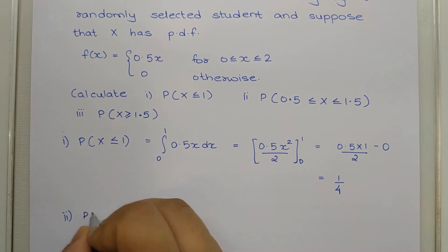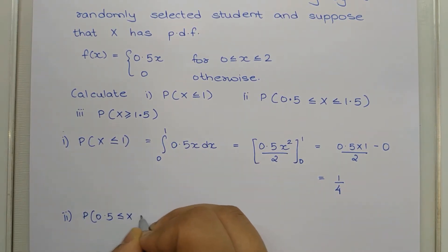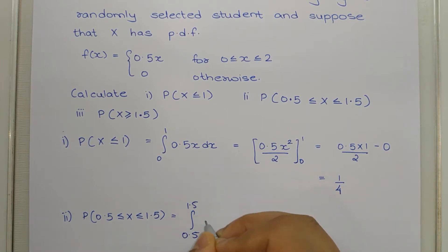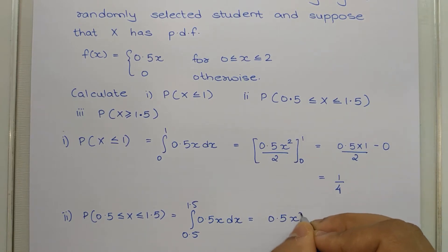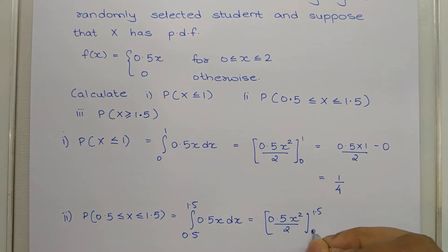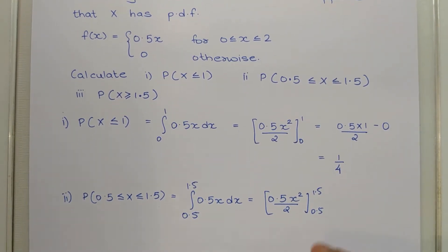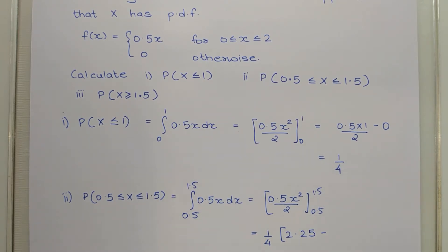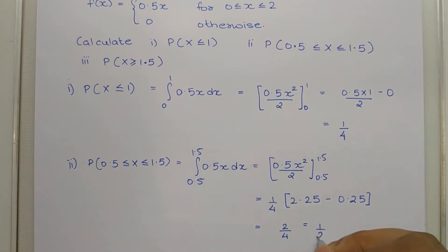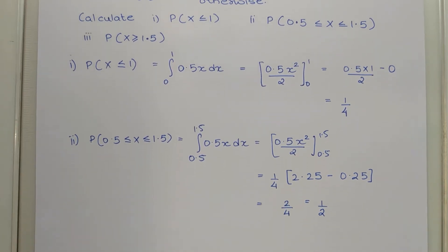Next, we find the probability that x is between 0.5 and 1.5. The integration part remains the same: 0.5x²/2, evaluated from 0.5 to 1.5.